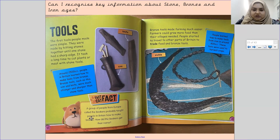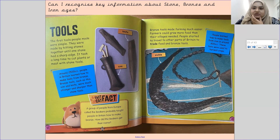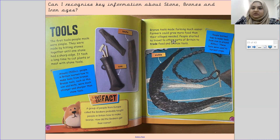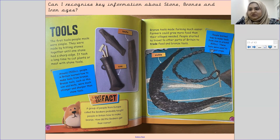A group of people from Europe called the Beakers probably taught people in Britain how to make bronze. Bronze tools made farming much easier — farmers could grow more food than their villages needed. People started to travel to other parts of Britain to trade food and bronze tools. People learned how to make tools from iron around 800 BCE, and these tools were used to harvest crops.